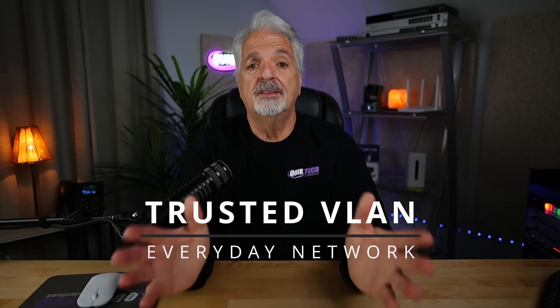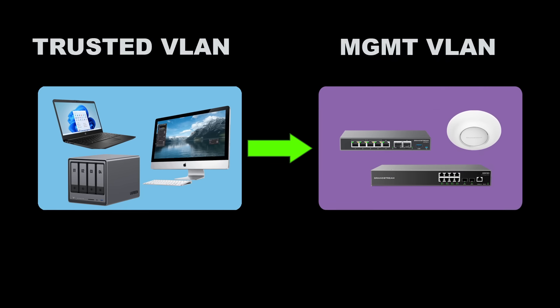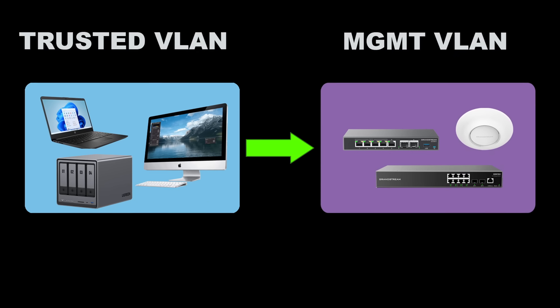Next, let's talk about the trusted network. This is your everyday functional network — it's where you put your PCs, laptops, maybe a NAS device or server. It's where you do your everyday browsing, editing, and backups. You can give the trusted network full access to the management network if you need to access your router, switches, or access points, or you can block it completely from the management network and just allow one admin computer access via a firewall rule to talk to VLAN 1.